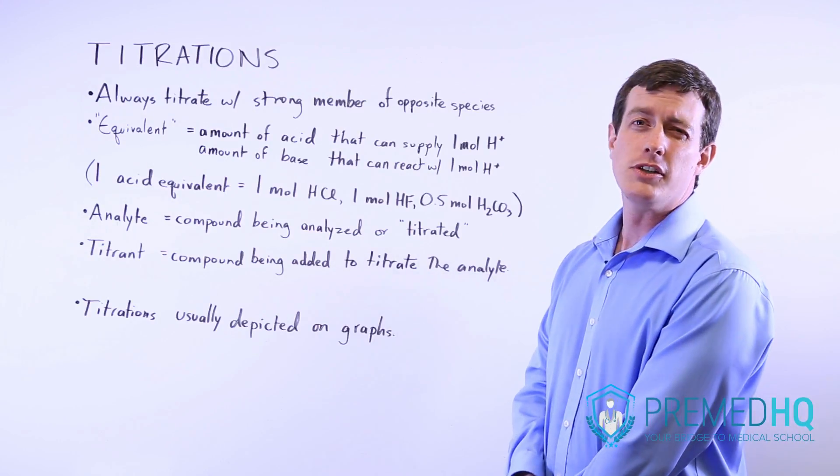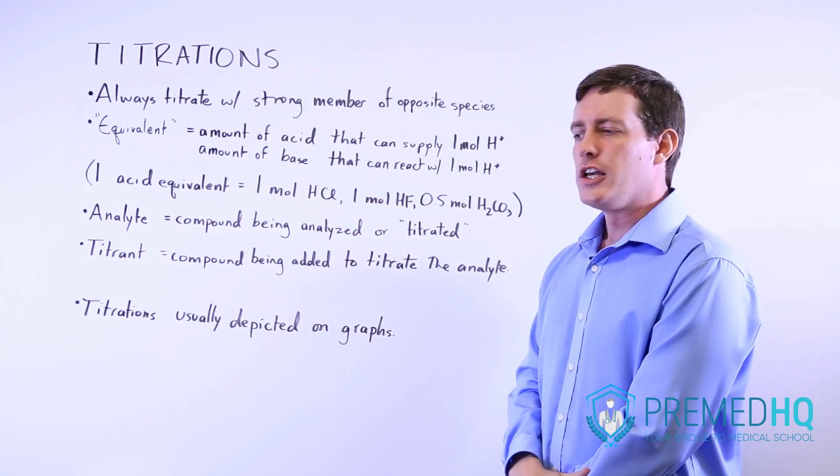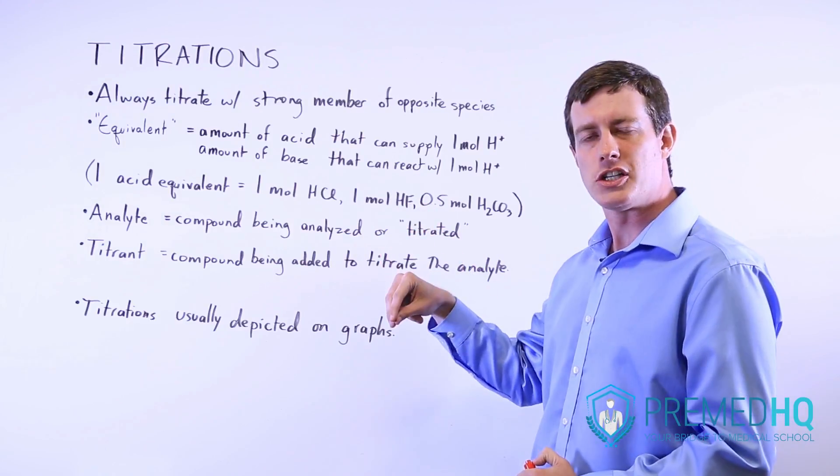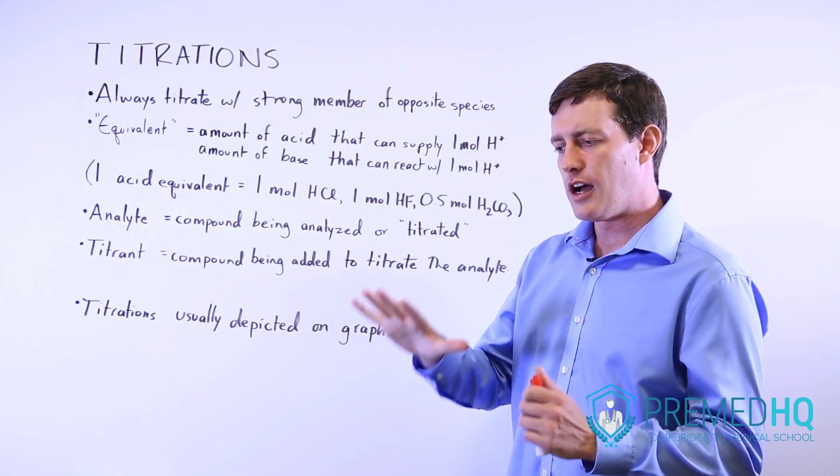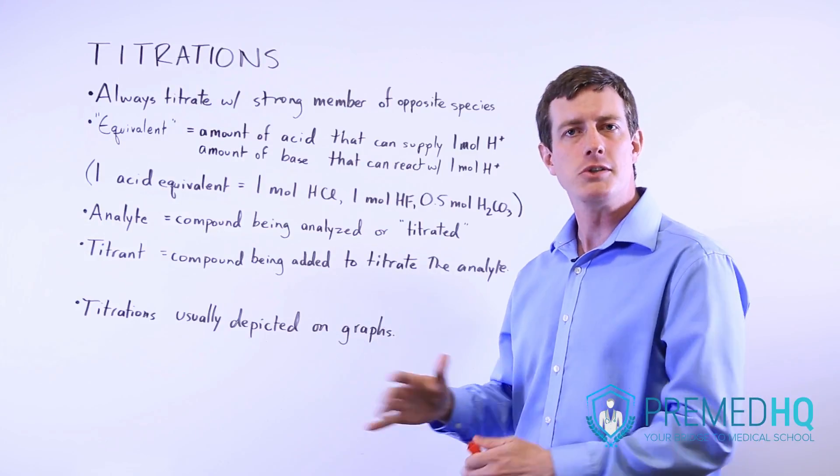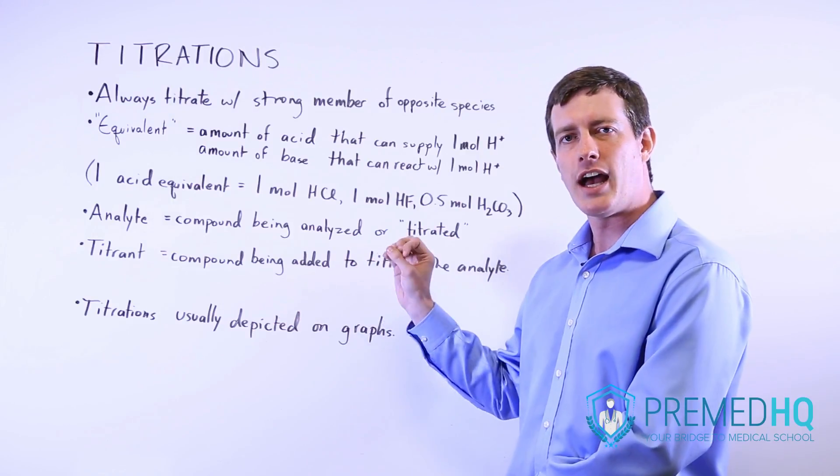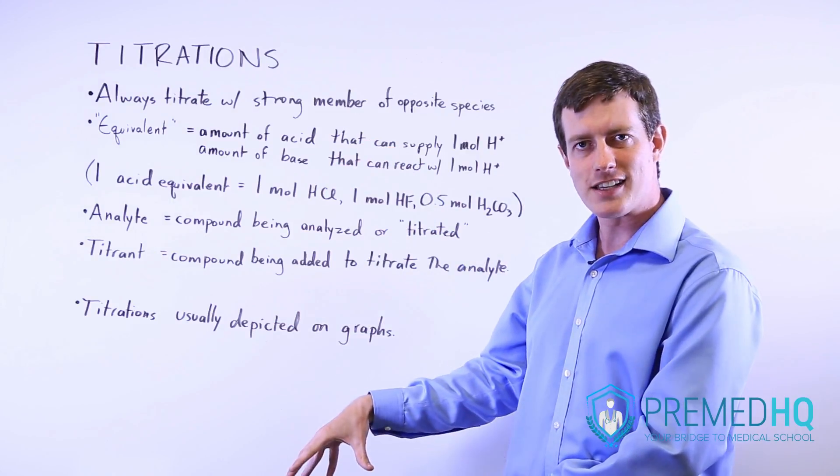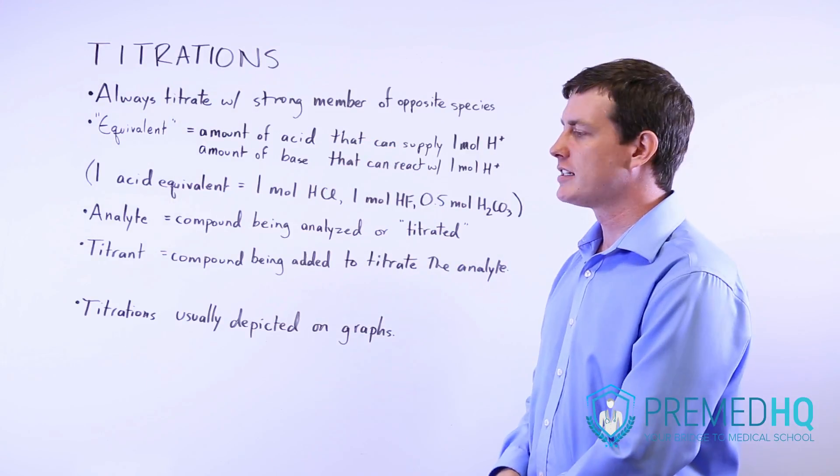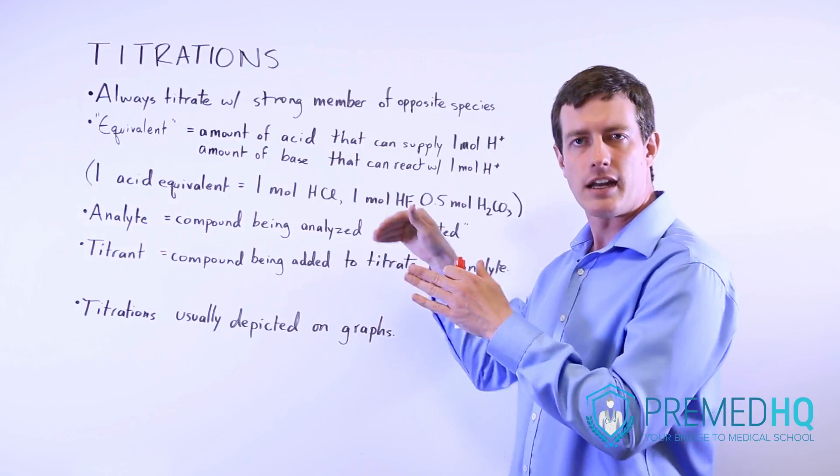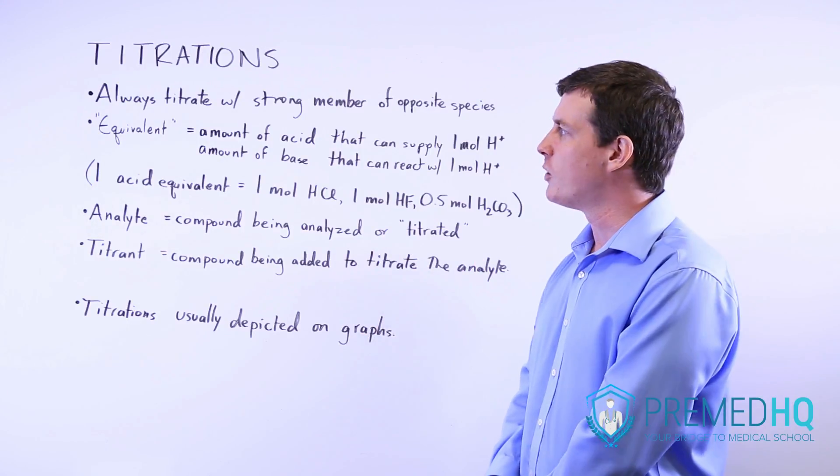If you're doing a redox titration, you will add a strong oxidizing agent to a highly or moderately reduced species. But if you're trying to analyze a reduced species, you must be adding a strong oxidizing agent. And if you're trying to analyze an acid, you must be adding a strong base and so on.